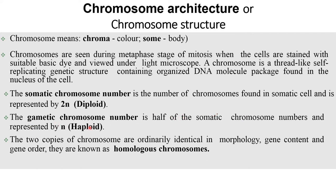The somatic chromosome number is the number of chromosomes found in the somatic cell and is represented by 2N. The gametic chromosome number is half of the somatic chromosome number and is represented by N, and it is also called as haploid.